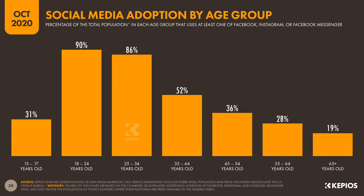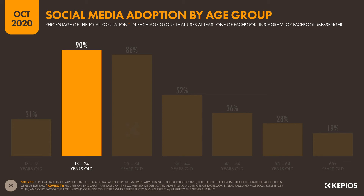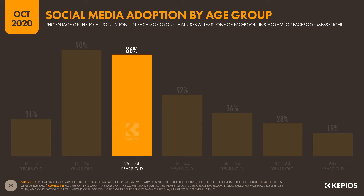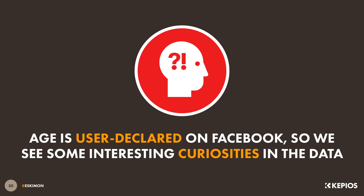The previous chart offered insights into the share of social media audiences by age and by gender, but this next chart shows the percentage of the total population in each age group that uses social media, once again based on that combined audience for Facebook, Instagram and Facebook Messenger. This data indicates that 9 in every 10 people aged 18 to 24 already use social media today, with the figure for people aged 25 to 34 not far behind at 86%. It's worth noting that Facebook reports audience age based on users' self-reported values.